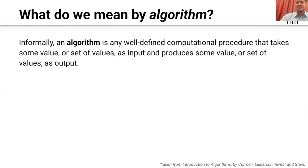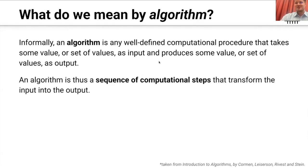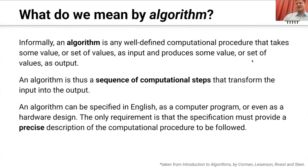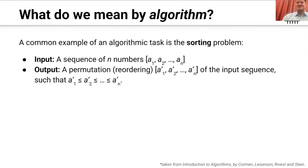How can we define an algorithm? Informally, an algorithm can be seen as any well-defined computational procedure that takes some value or set of values and produces some value or set of values as output. Thus, an algorithm can be seen as a sequence of computational steps that transforms the input into the output. The authors describe that an algorithm can be given in a variety of modalities — English language, computer program, or even hardware design — as long as the specification gives a precise description of the computational procedure to be followed. Since we don't have a very concise definition, it's good to show a concrete example.